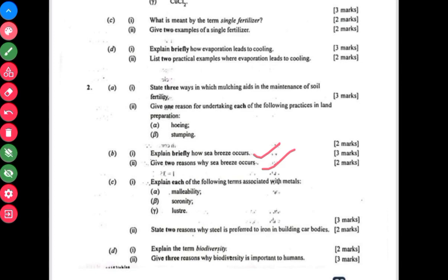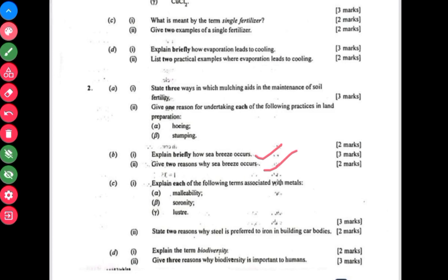Now this is where there is a mistake. Question 2c: explain the following terms. Malleability, ability to beat metals into shapes, then sorority. The word is not sorority, it is sonority.